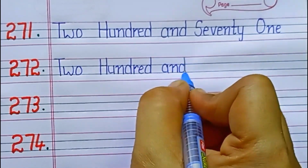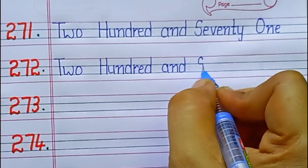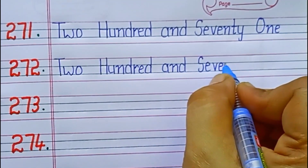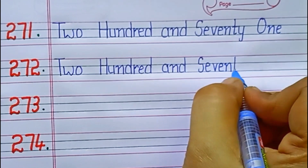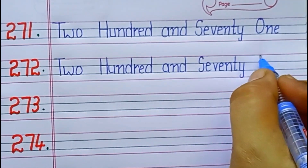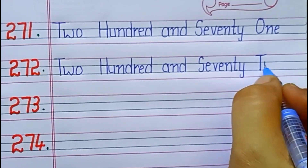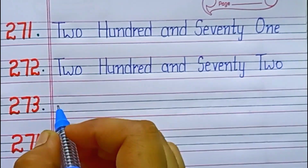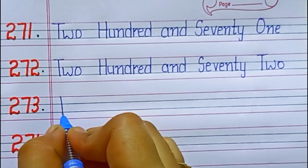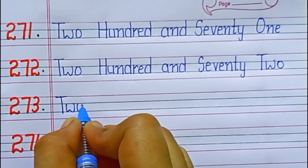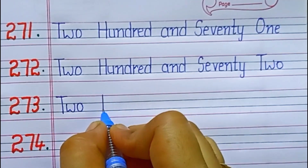272. S-E-V-E-N-T-Y, 70. T-W-O, 2. 72. Two hundred seventy-two.